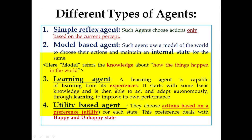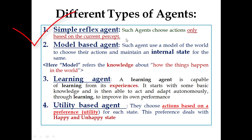Now, what are the different types of agents? There are four important types. The first one is the simple reflex agent. This type of agent chooses actions only based on the current percept. I have underlined the important part: simple reflex agents choose actions only based on the current percept and they do not rely on the sequence of percept history.